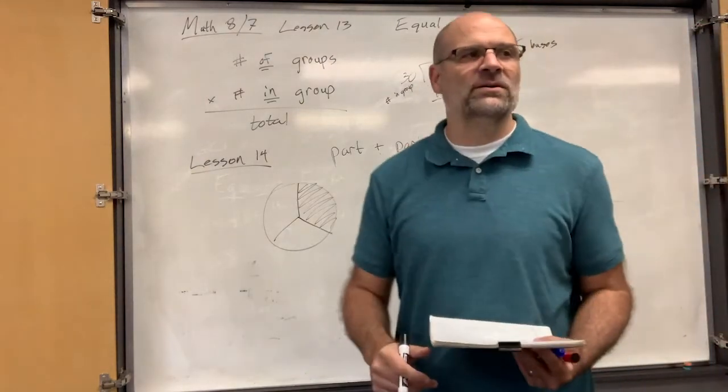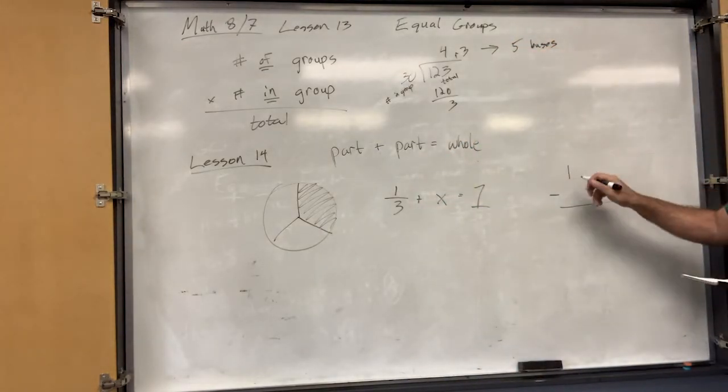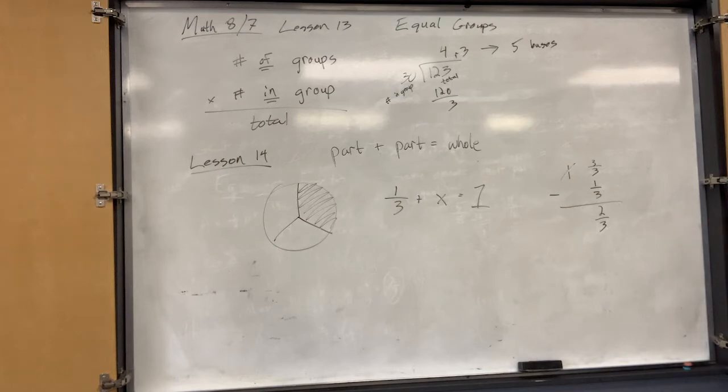But, so we obviously can't subtract zero-thirds minus one-third, so we borrow, right? So we're borrowing one, so one is just three-thirds, so three-thirds minus one-third is two-thirds. It seems like we over-complicated it when we did that, right? Yes. The easier way to do it is to figure out what's left.